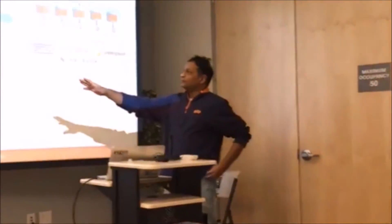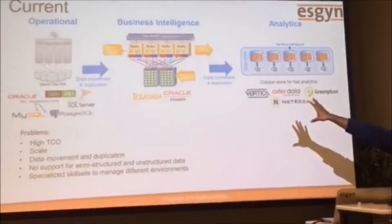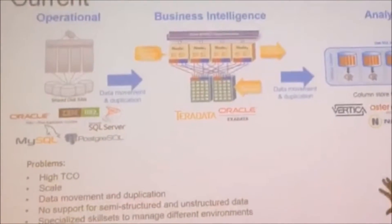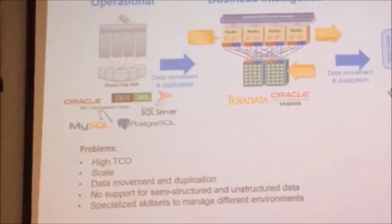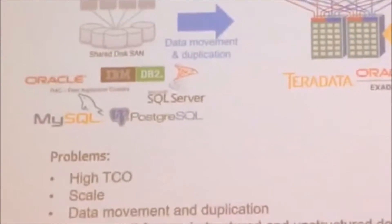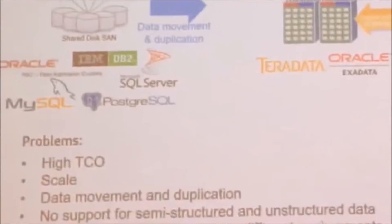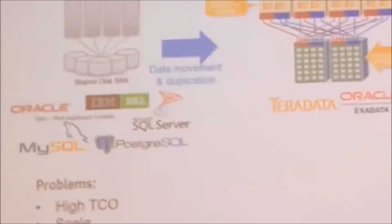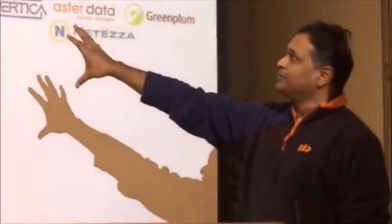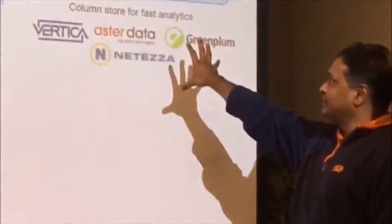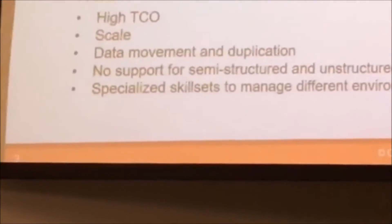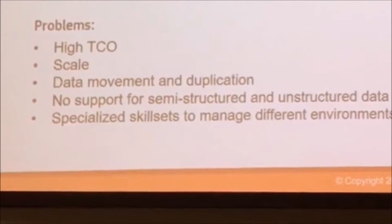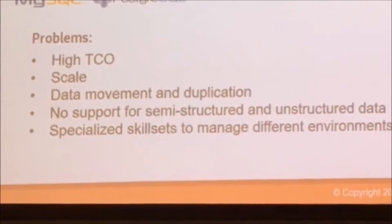From the current data model's perspective, you have these different workload silos, where the operational side — which is mainly the hot data — is where rapid data addition is happening, and you are trying to do real-time reporting. As the data gets colder, you move into another system, and then again to another system to do your analytics. The problems with this are very high TCO, and the reason you have to do it is because these systems don't scale.